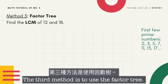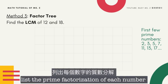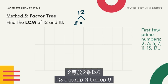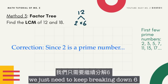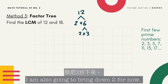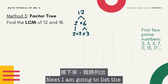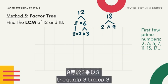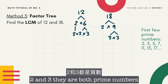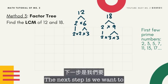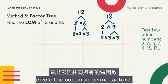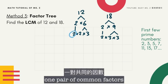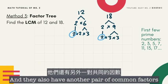The third method is to use the factor tree to list the prime factorization of each number. Starting with 12: 12 equals 2 times 6, and since 2 is prime, we keep breaking down 6, giving us 2 times 3. Next, the prime factorization of 18: 18 equals 2 times 9, and 9 equals 3 times 3. Since 2 and 3 are both prime numbers, we stop here. Now we circle the common prime factors. Looking at 2 times 2 times 3 and 2 times 3 times 3, they share one pair of 2 and one pair of 3 as common factors.